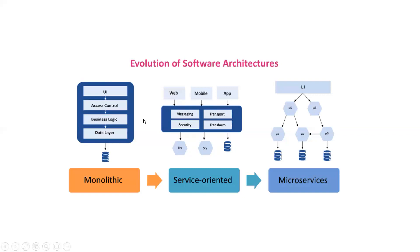In monolithic architecture everything is deployed on a single server, but in service-oriented architecture services are deployed on different servers and the UI is in a separate deployment. SOA also has some problems, and to address those, microservices were introduced.